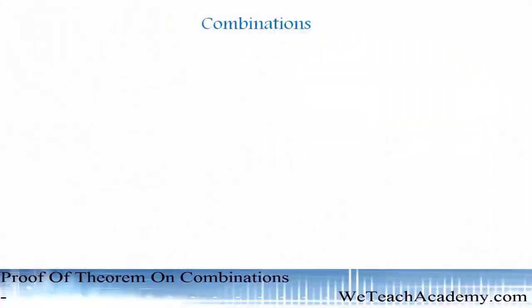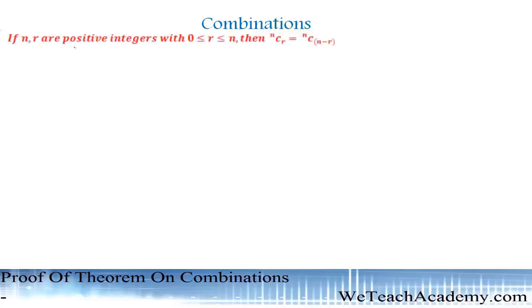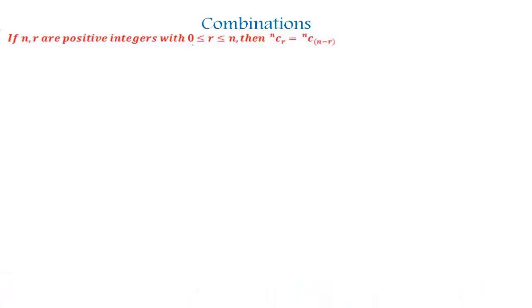Welcome back, friends. This is Lena from VT Check Academy, and today I am going to prove one theorem on combinations. The theorem is: if n and r are positive integers with 0 ≤ r ≤ n, then nCr is equal to nC(n−r).